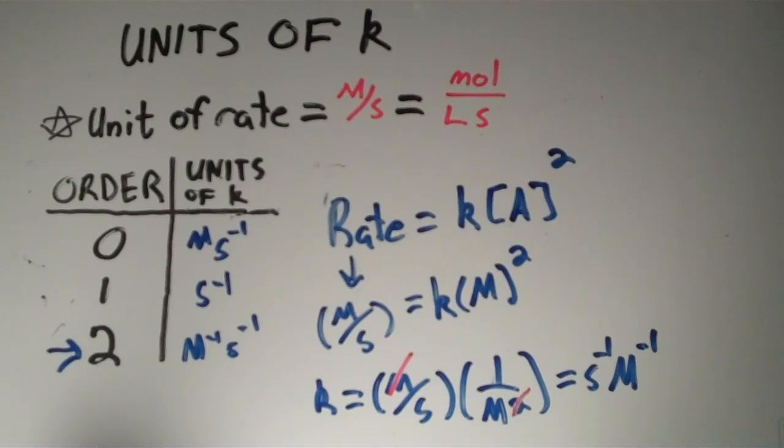When you study kinetics, you might have to memorize a lot of things, but this doesn't have to be something you memorize as long as you remember the rate laws. If you need extra memory space for other things, this trick will help you get the units of the rate constant. Once you have the units, you can use the integrated rate law to predict the concentration of a reactant at a certain time.